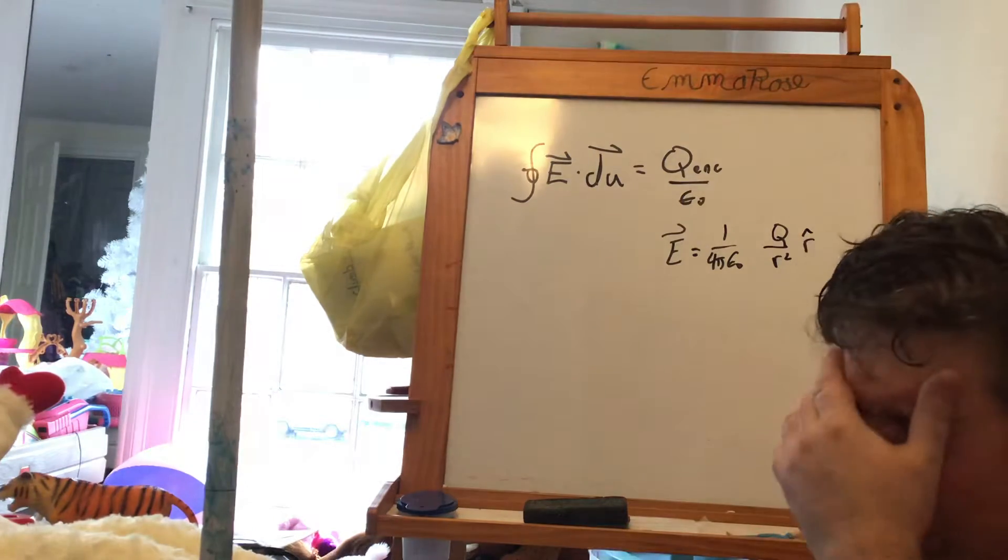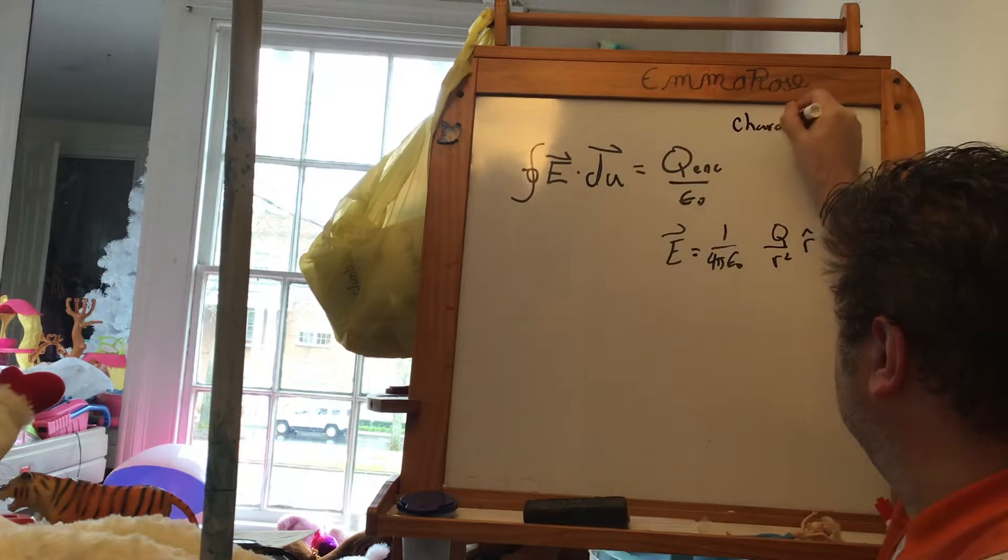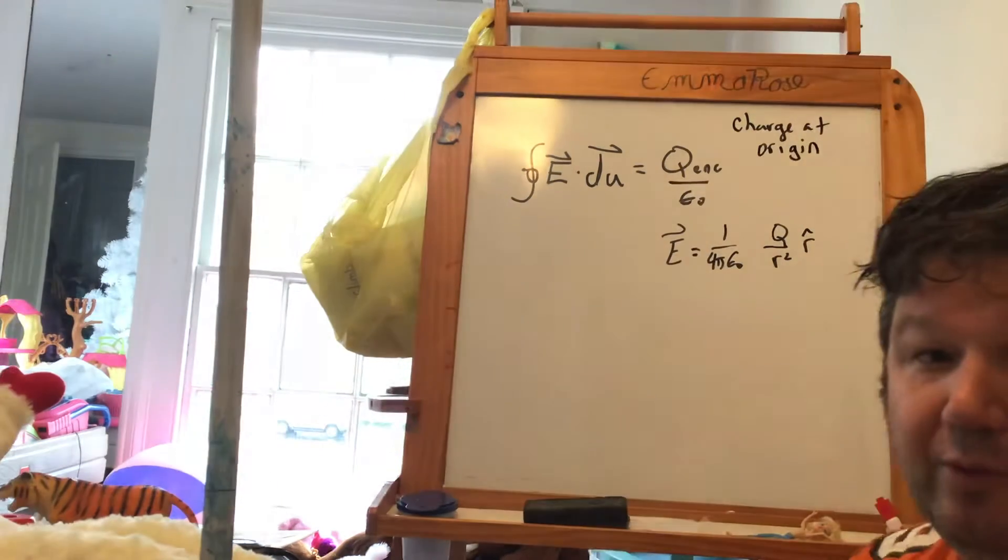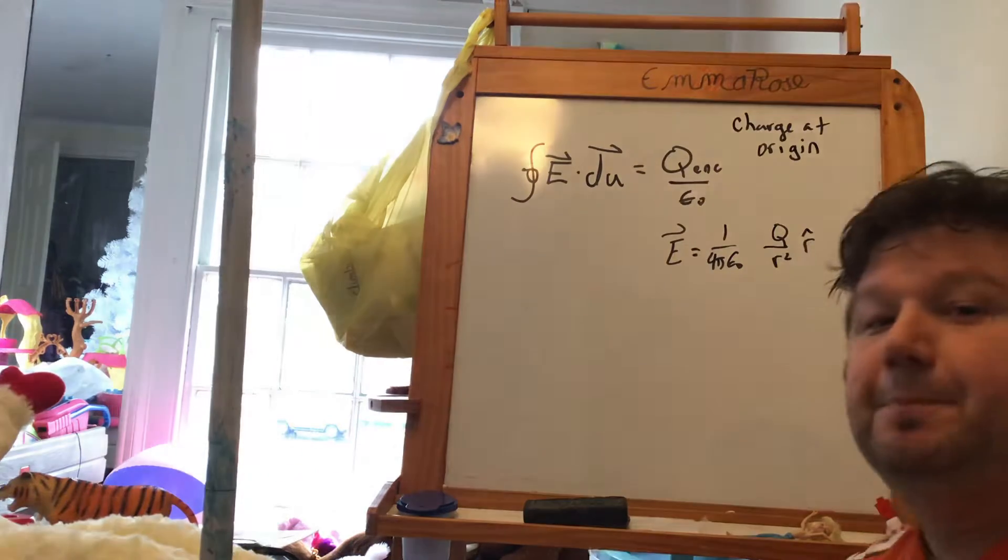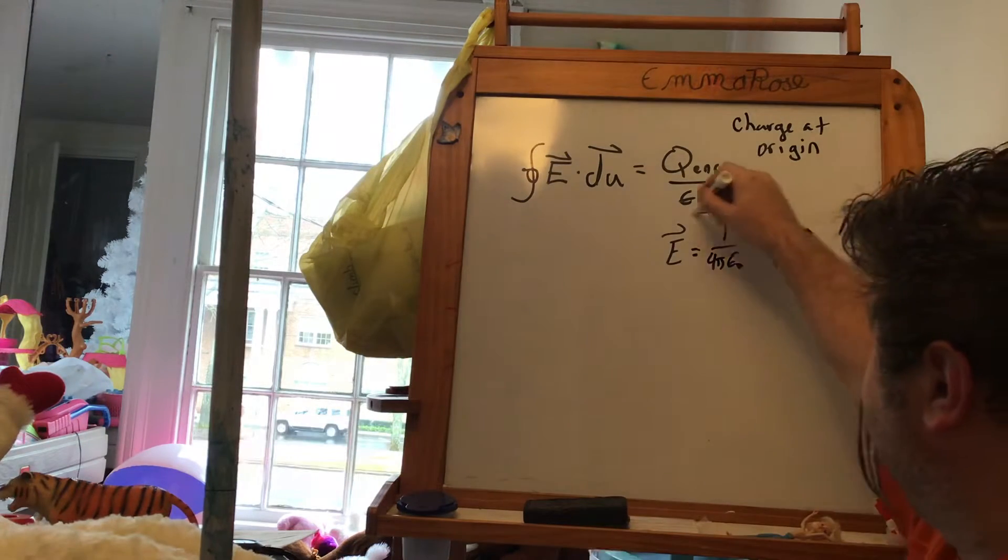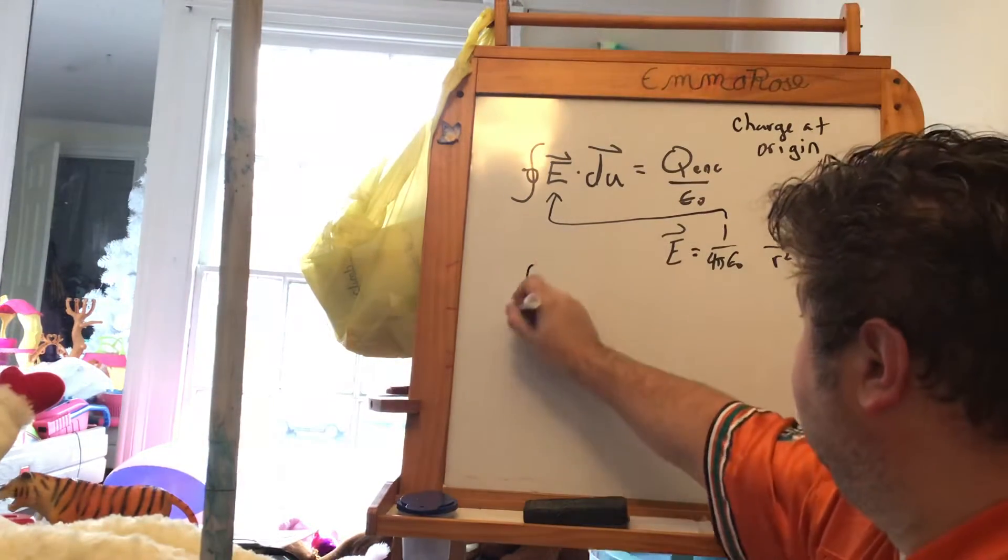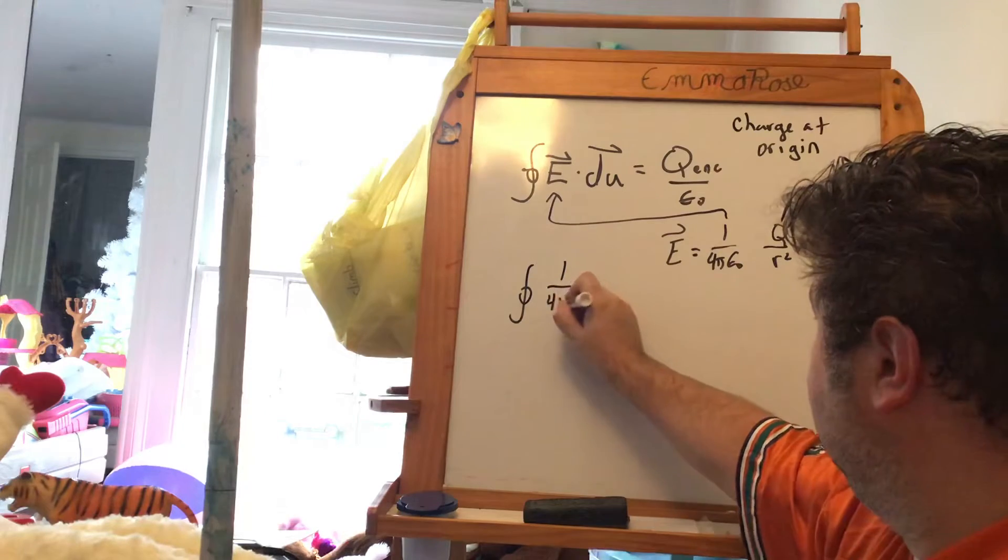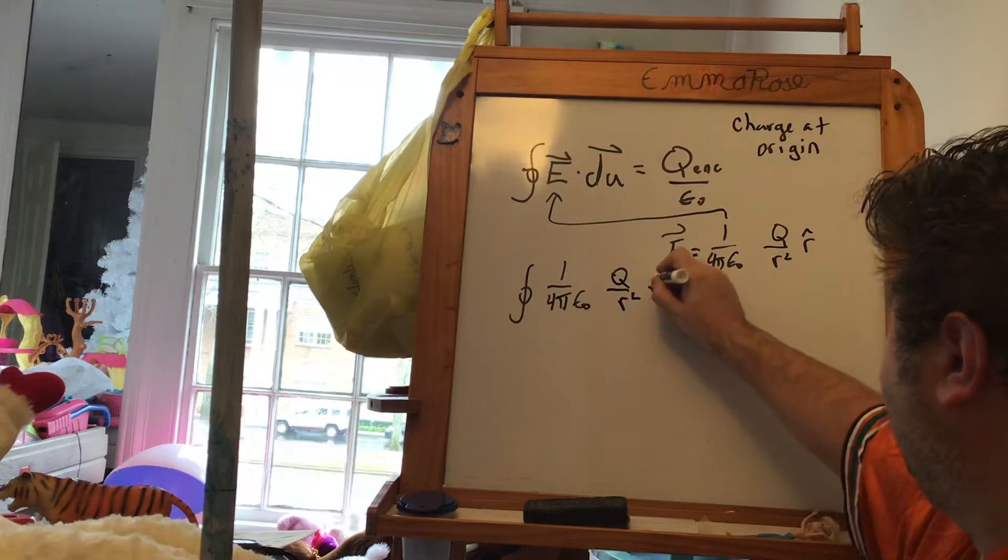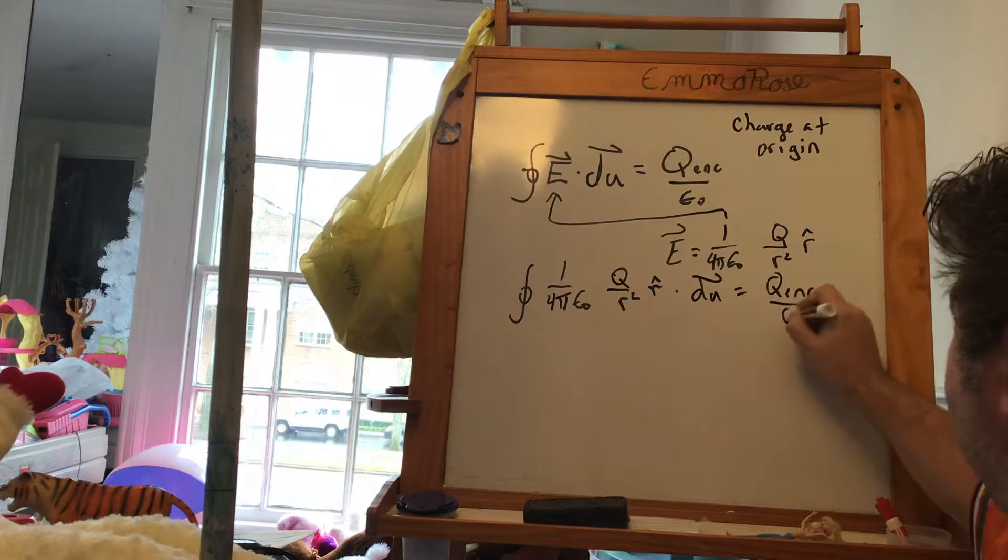Of course, it's script r, but let's just imagine that we're putting this charge at the origin. So script r is really just r. It's a choice. Now, if we take this and plug it in here for E, we get some really interesting things happening. So the integral is 1 over 4π epsilon nought q over r squared r hat dotted into dA equals q enclosed over epsilon nought.